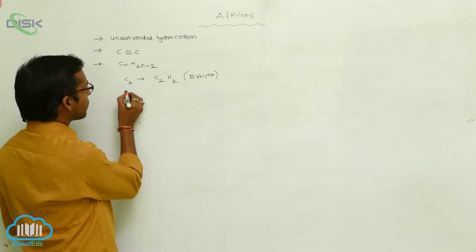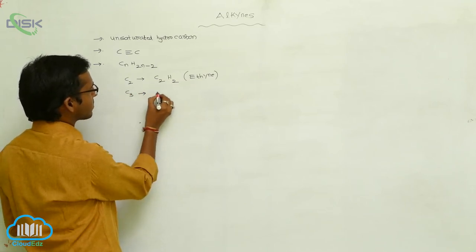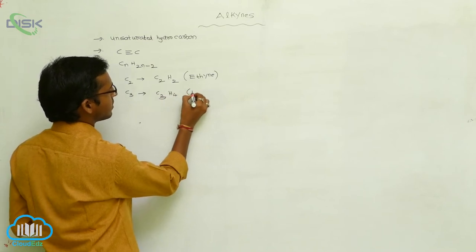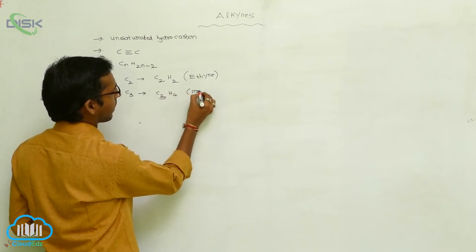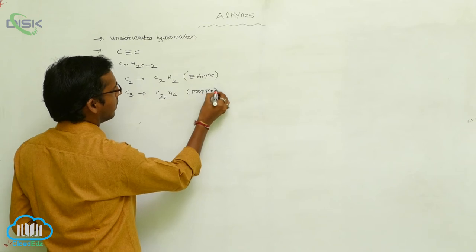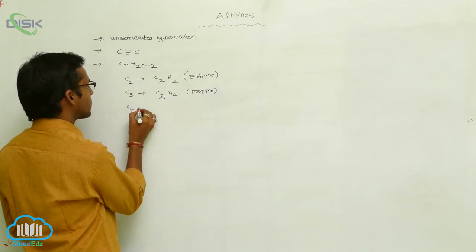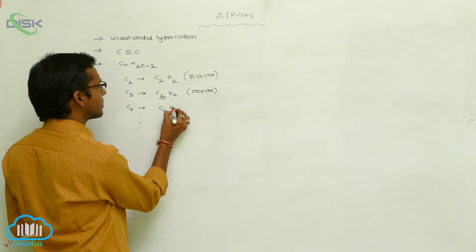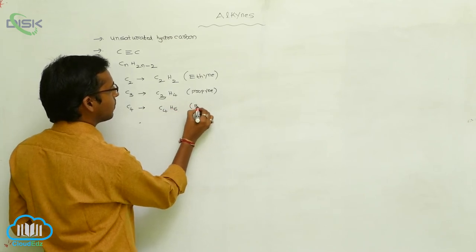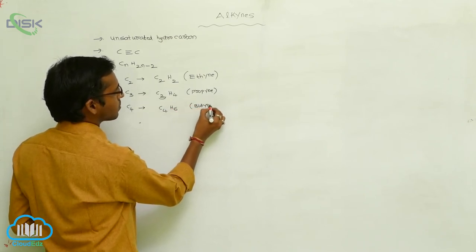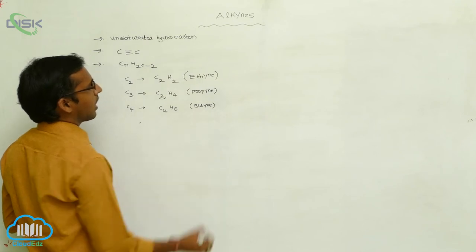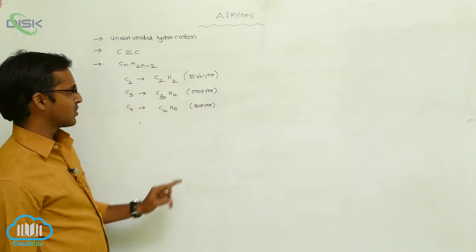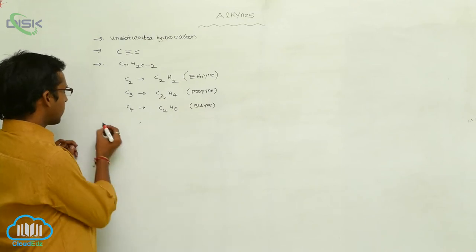If the number of carbons are 3, then you can write C3H4. This is propyne. And if the number of carbons are 4, you can write C4H6. This is butyne. So alkynes follow the general formula CnH2n minus 2.